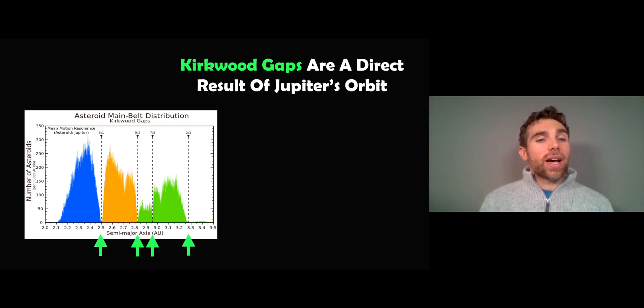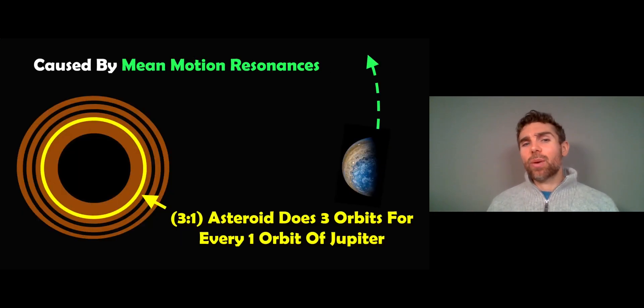But these are known as Kirkwood gaps, and they are a direct result of Jupiter's orbit and its gravitational influence on the asteroid belt. Despite being a reasonable distance from it, it's not orbiting inside it or right on its edge. It's a reasonable distance from the asteroid belt, but it still can create these gaps in there. And highlighted at the bottom with the green arrows is the location of these gaps here. And you can see the numbers at the top there, the dotted lines: 3, 1, 5, 2, 7, 3, 2, 1.